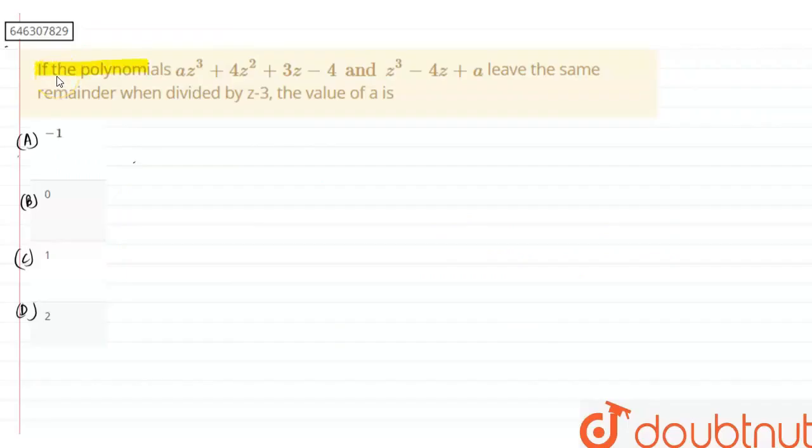In this question, if the polynomial az³ + 4z² + 3z - 4 and z³ - 4z + a leave the same remainder when divided by z - 3, then the value of a is... So here the two polynomials are given.